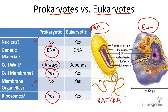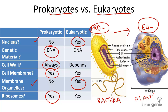Eukaryotic cells, however, are characterized by the fact that they are relatively complex and larger compared to prokaryotic cells generally. They have a nuclear membrane and membrane-bound organelles like mitochondria and chloroplasts. Examples of eukaryotic cells include plants, animals, protists, and fungi.